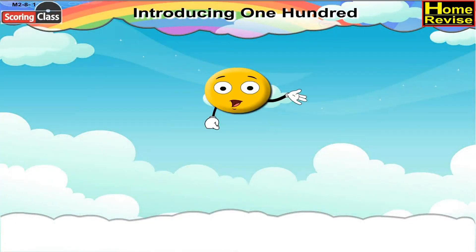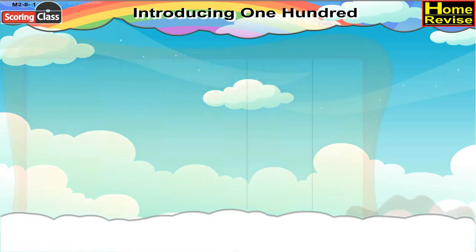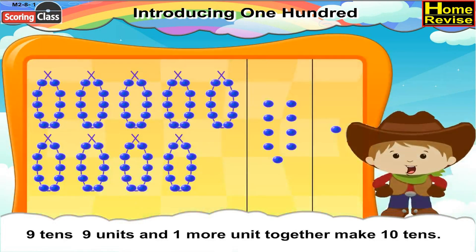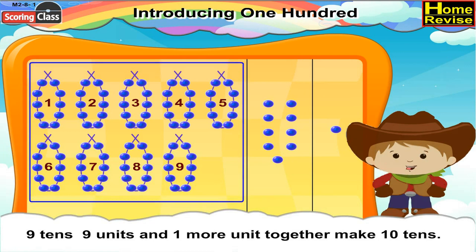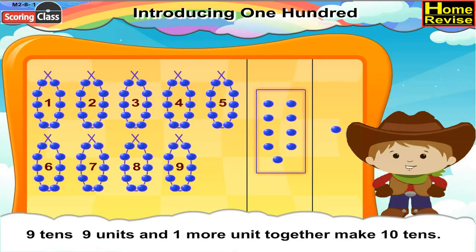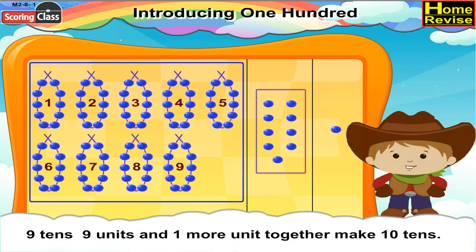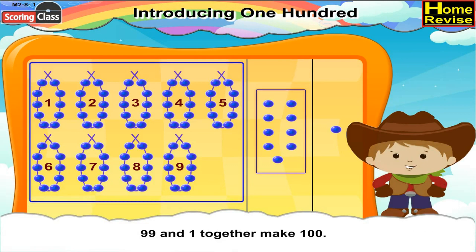Introducing 100. Children, if you see the picture, we have 9 strings of 10 beads each. You know what it means? It means 9 tens. And we have 9 extra beads with it. So, it is 9 tens, 9 ones, which makes it 99.